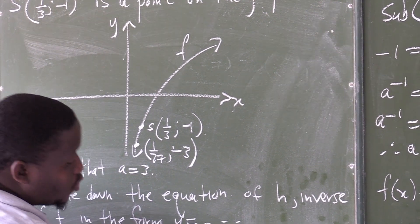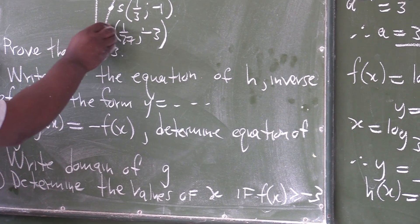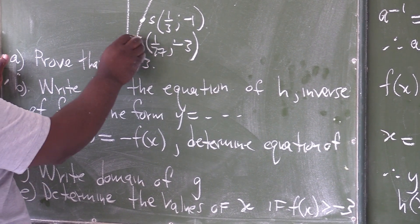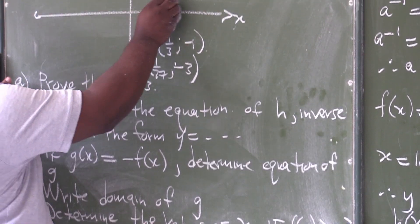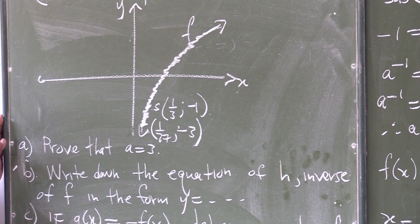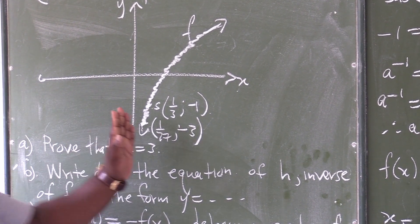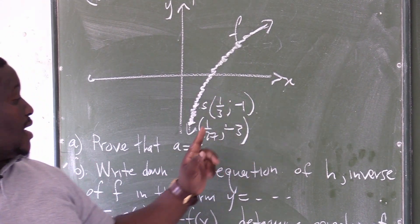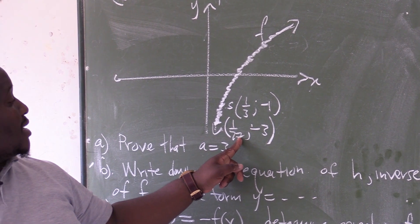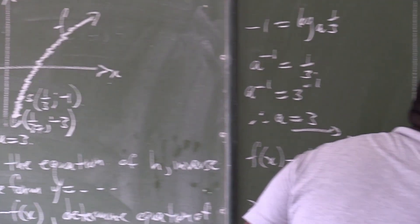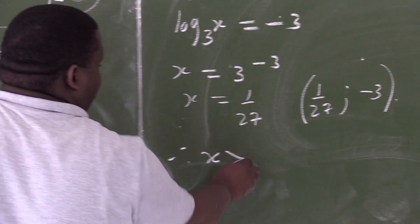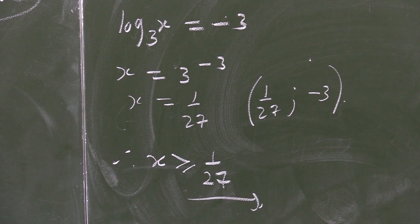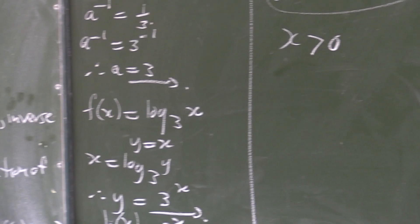We want the y values to be greater than or equal to negative 3. Looking at the graph of f from the critical point and moving in the direction where y is greater than negative 3, the values of x are becoming greater than 1/27. Therefore, x must be greater than or equal to 1/27, and that is our solution.